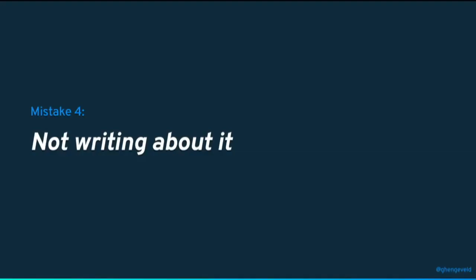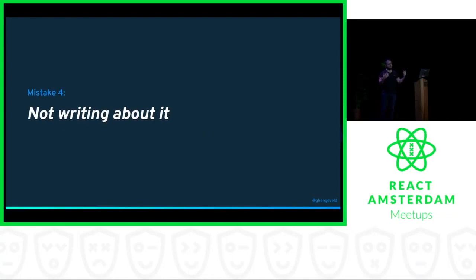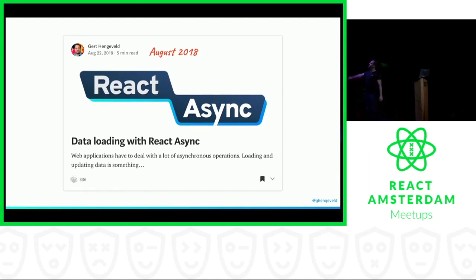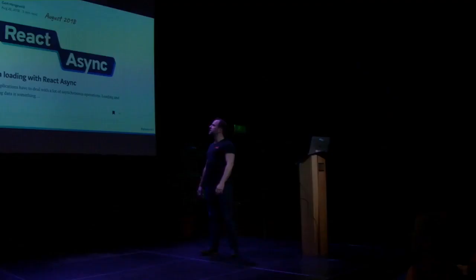Mistake number four: not writing about it. When you have an open source project, it's your baby and you want it to grow and be popular and succeed. Popularity comes not just from having a great library in itself - your code can be flawless and perfect and solve a lot of problems, but if people don't hear about it, they won't know about it. One of the things I've been doing is speaking at meetups and conferences. But what actually happened in August 2018 when I released the first version of React Async, I wrote a blog post: 'Data loading with React Async.'